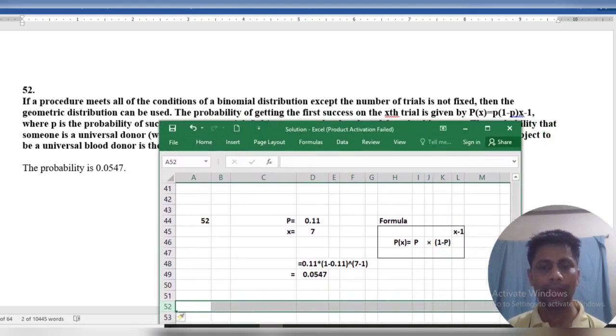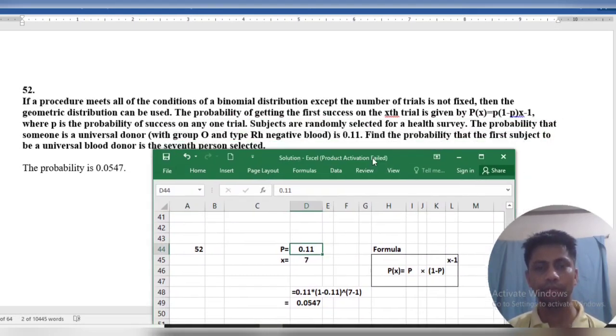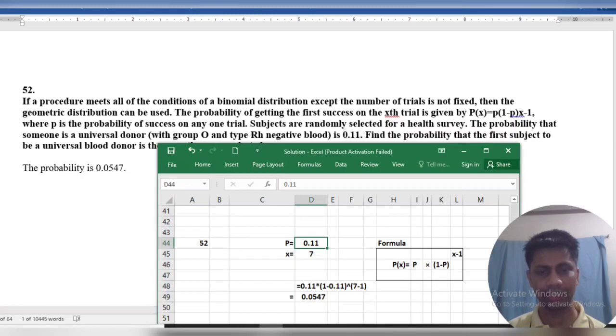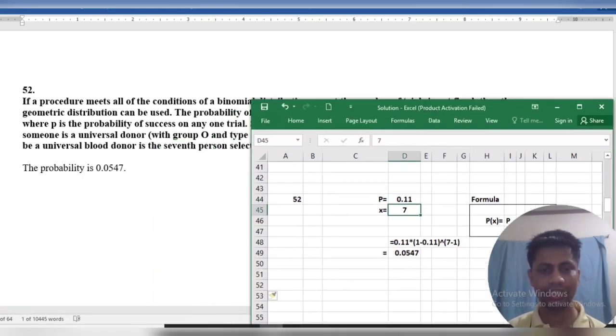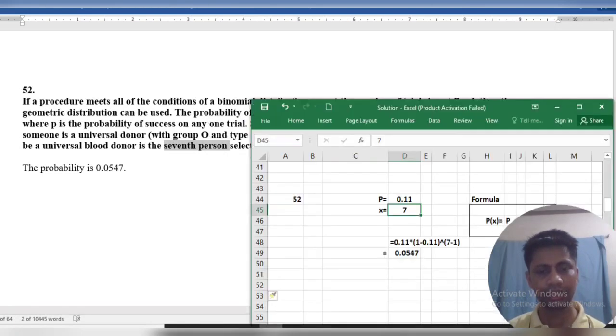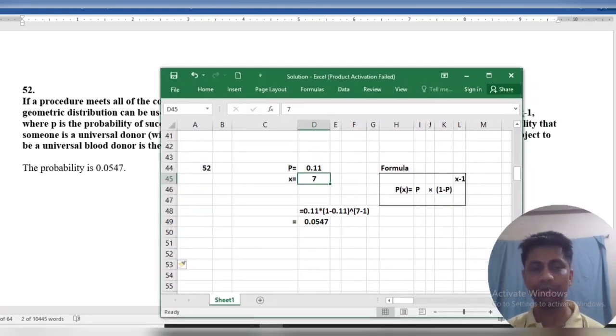P equals 0.11 and X equals 7 (seven persons). We know the probability distribution of geometric distribution is P(X) = P × (1 - P)^(X-1).